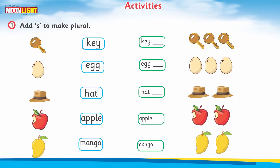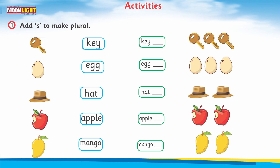First of all, look here — there is a key, and the key is one in number, so this is singular. After that you can see there are three more keys. The spellings are K-E-Y and there is a blank space. What you have to do is fill that space.